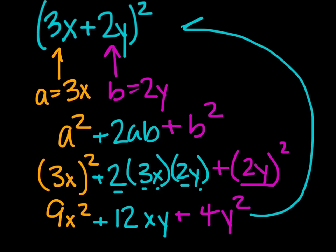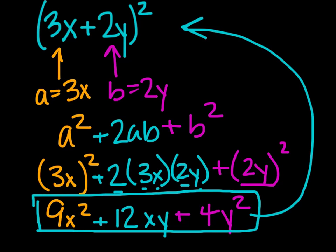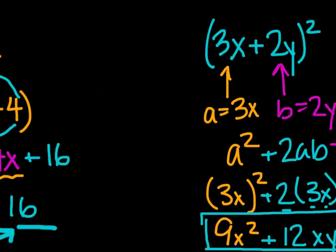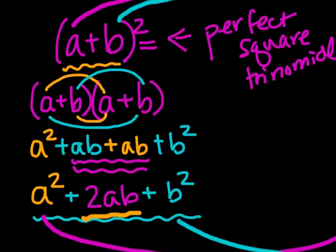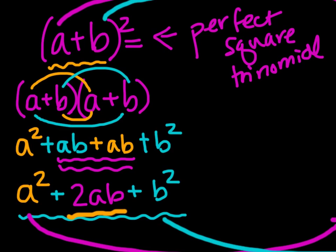This is equal to this. However, right here, our answer, this 9x squared plus 12xy plus 4y squared, this is the expanded perfect square trinomial. Now we have one more version of this perfect square trinomial. We have the a plus b squared. And then we also have one that is subtracted.